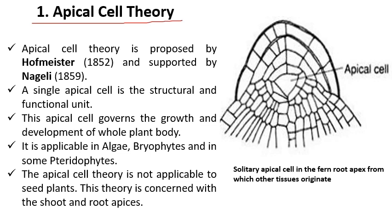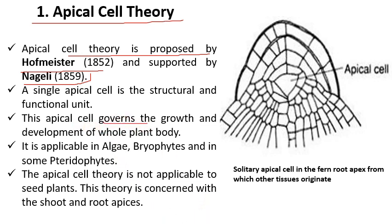The first theory of root apical meristem is the apical cell theory. This apical cell theory was proposed by Hofmeister in the year 1852 and further supported by Nagel in the year 1859. According to this theory, there will be a single cell — one cell — present, and this cell will be the structural and functional unit of the plant. The apical cell theory controls the growth and development of the whole plant body.